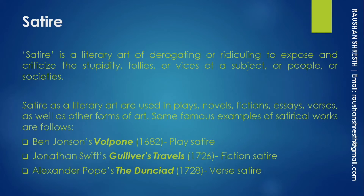Ben Jonson's Volpone, which came in 1682, is a play that uses satire. Jonathan Swift's Gulliver's Travels, which came in 1726, is a novel and also a satirical novel. Alexander Pope's The Dunciad is a verse satire. So now we will look specifically at verse satire, particularly from the 18th century and the Augustan period. Satire can appear in plays, fiction, stories, novels, and poems.